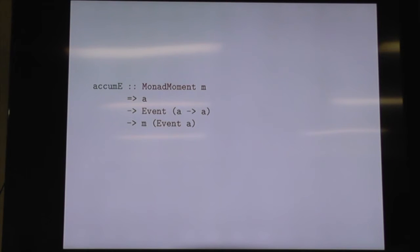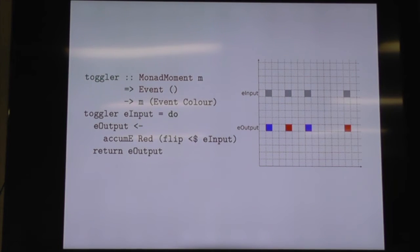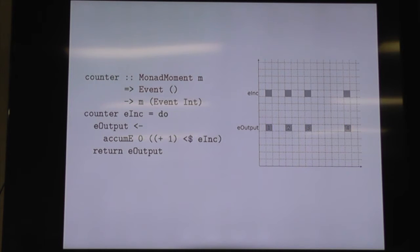To do that, we need our first function that gives us some form of state. The accumulate function accumulates events — it starts with a value, and every time the event fires, it applies the function in the event to our state. Here's an example where we start with red and every time we get an input, we flip the state of our colour. And here's how we do a counter — every time we increment, we add one. We never see the zero because the output is simultaneous with the input.